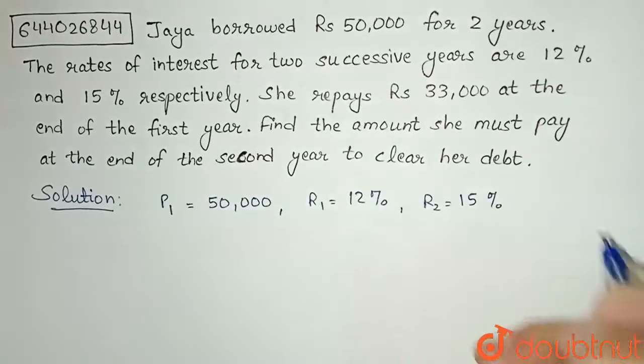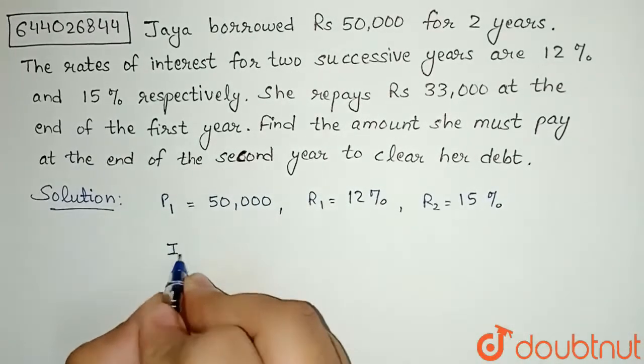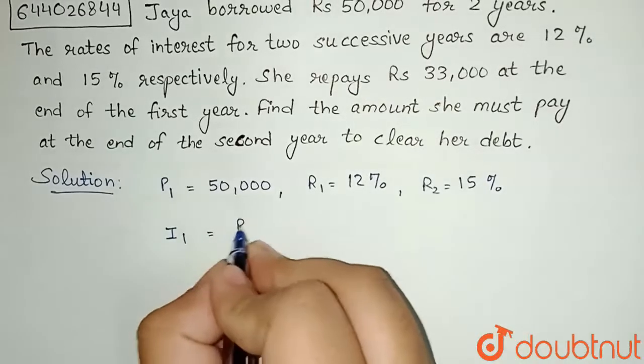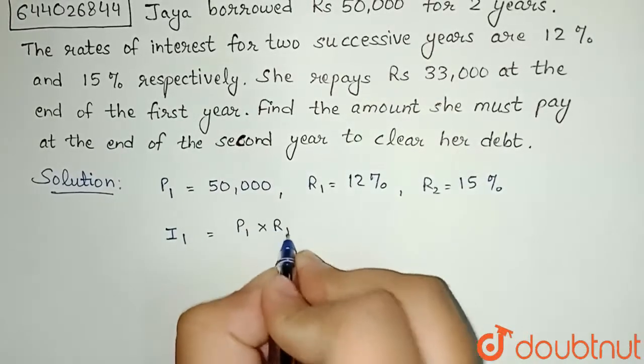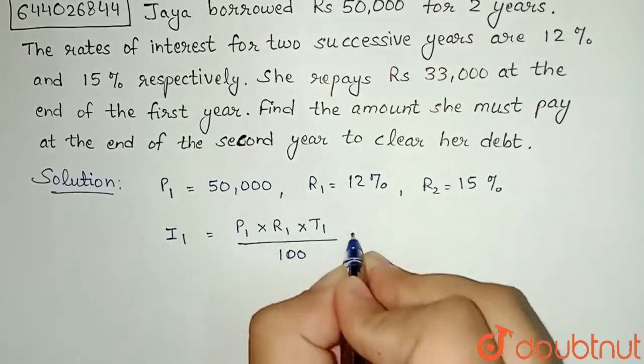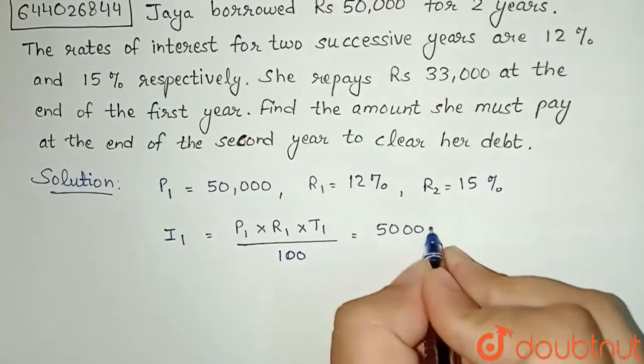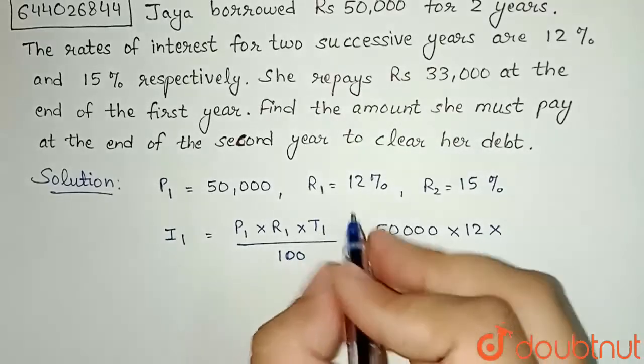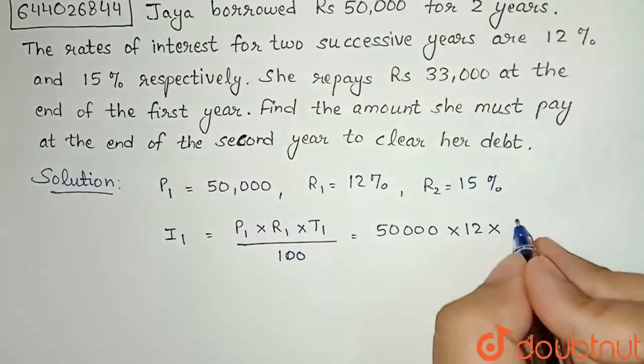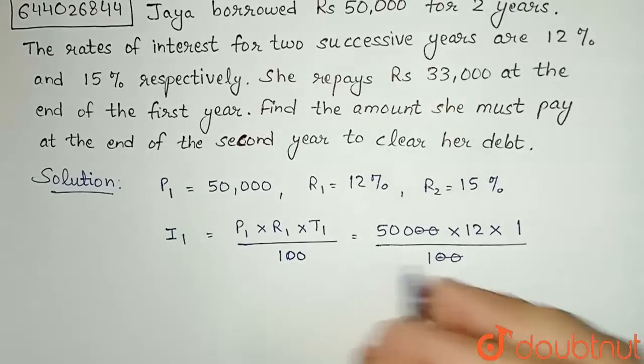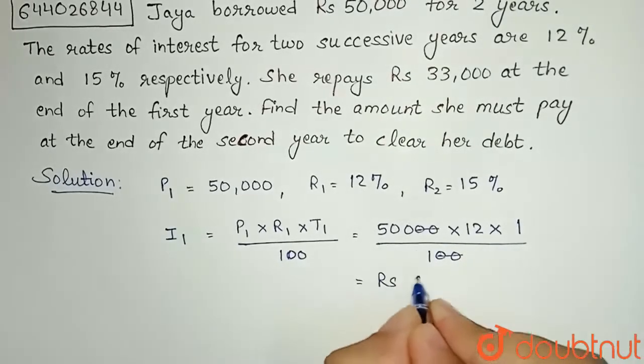Now let's find the interest for the first year, I1. The formula is (P × R × T) / 100, so I1 = (P1 × R1 × T1) / 100. P1 is 50,000, R1 is 12, and T1 is 1 year. So (50,000 × 12 × 1) / 100 = Rs 6,000.